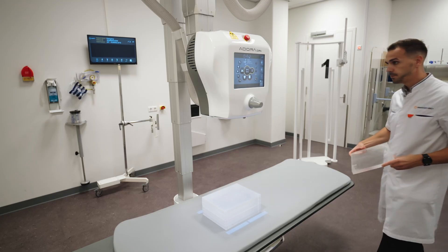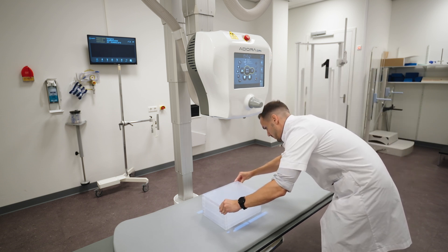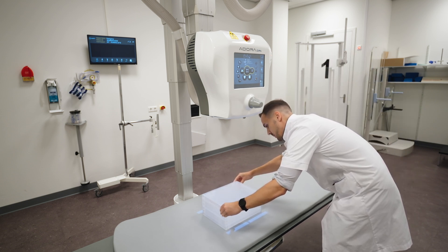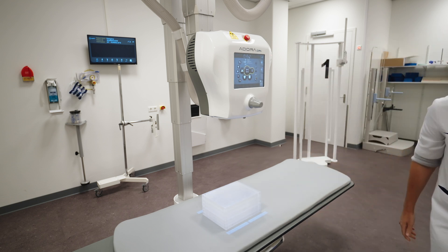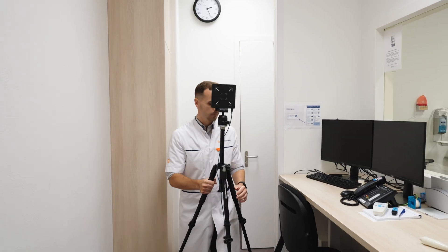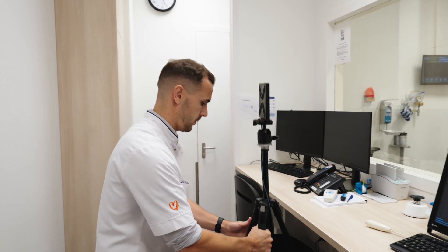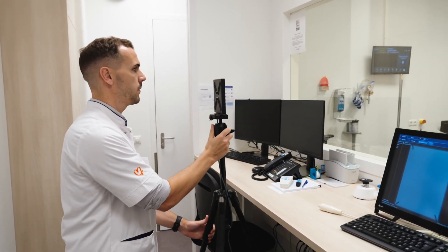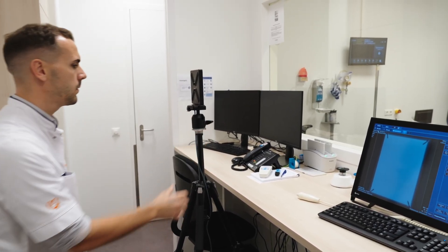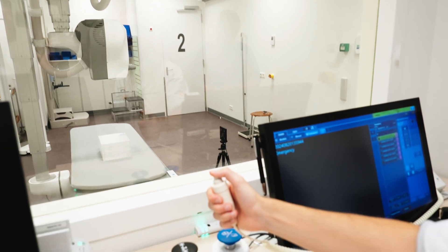To measure x-ray scatter first set up an x-ray scattering object in the x-ray beam. This should be representative of the relevant patient or body part that is scanned in the x-ray system. A typical routine is to measure x-ray scatter where staff and operators will be situated such as behind the lead glass.